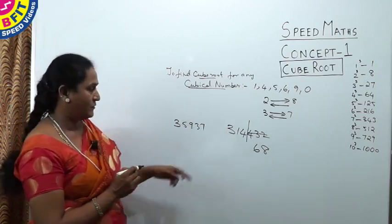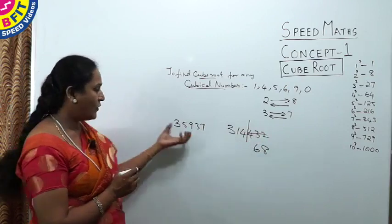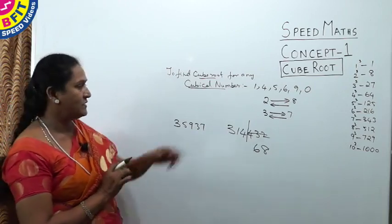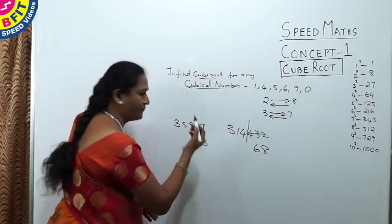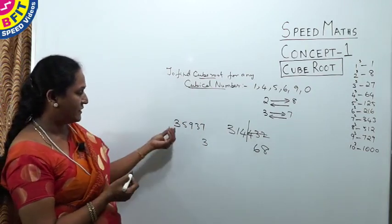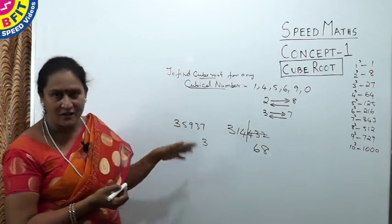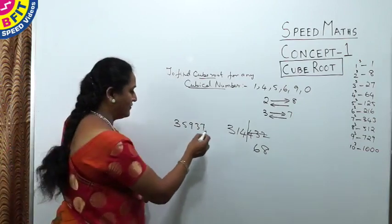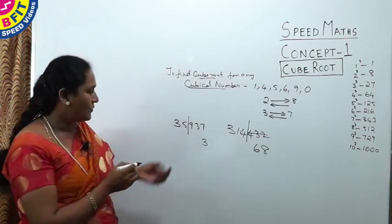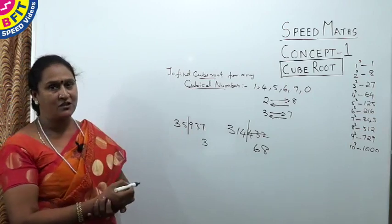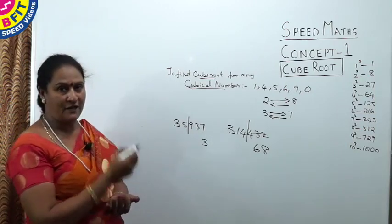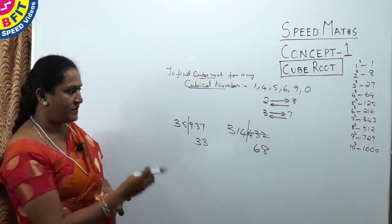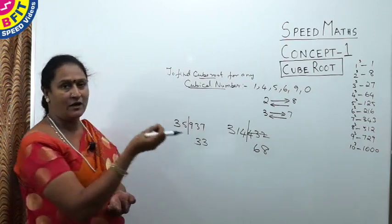For 35937: the unit digit is 7, so the cube root ends with 3. Draw a line after 3 digits — you are left with 35. Check which cube 35 has crossed: it has crossed 3³ = 27, so the tens place is 3. Cube root of 35937 is 33. As soon as you see the number, you can write the cube root immediately within seconds using this pattern.